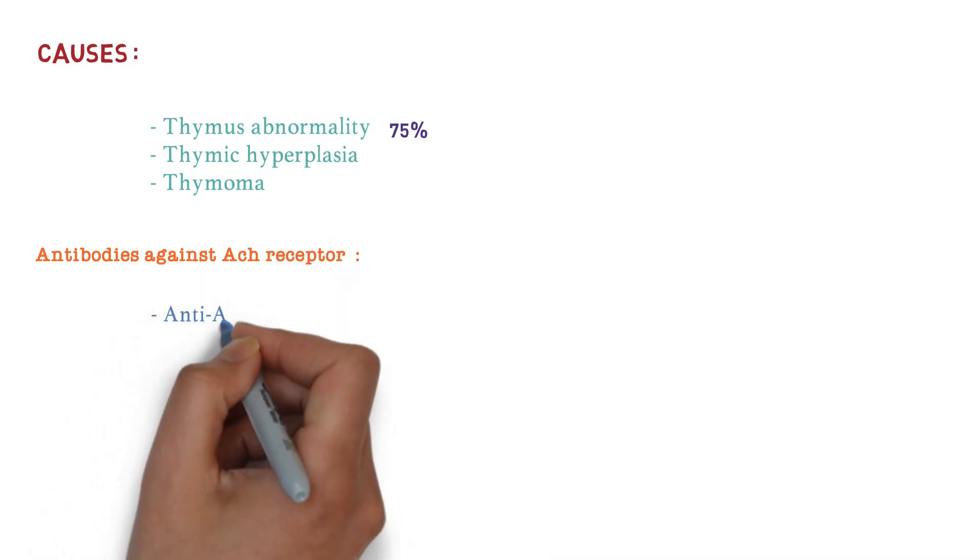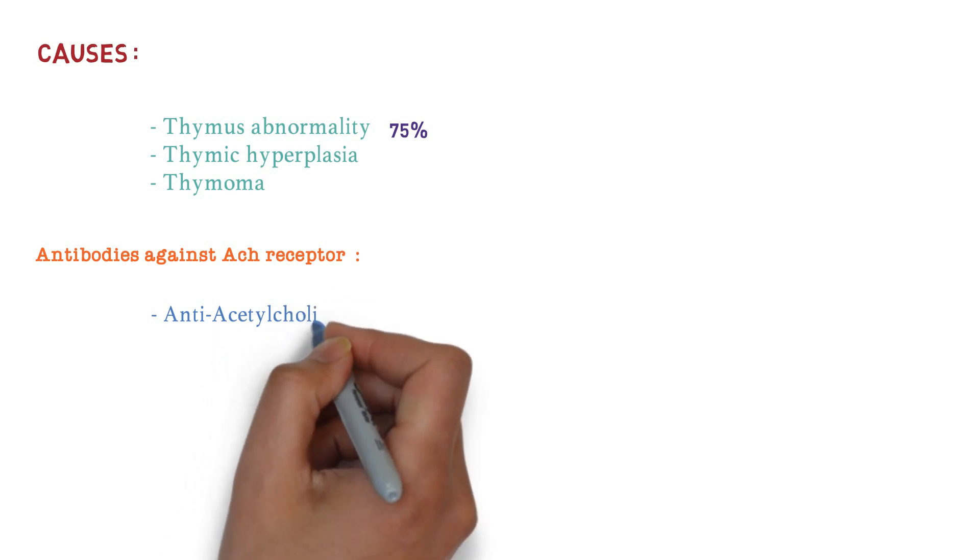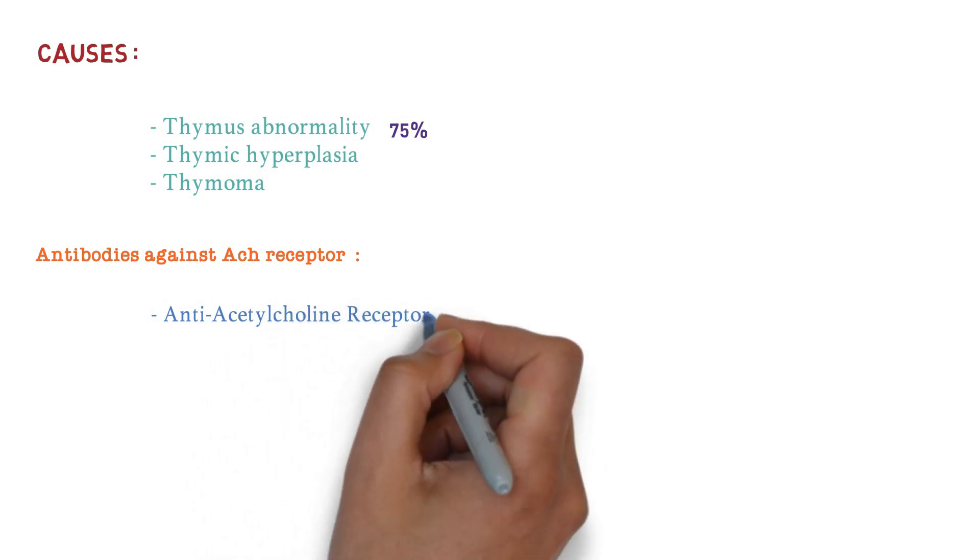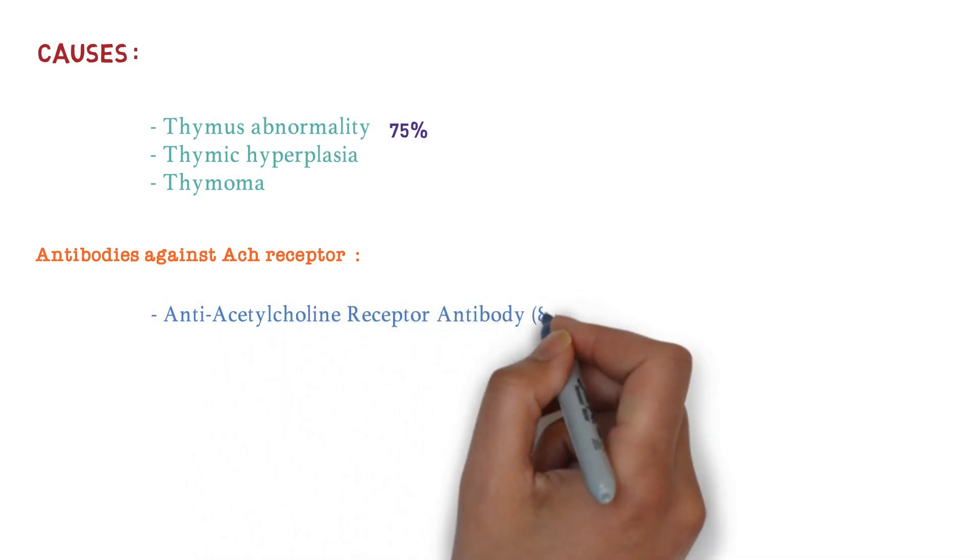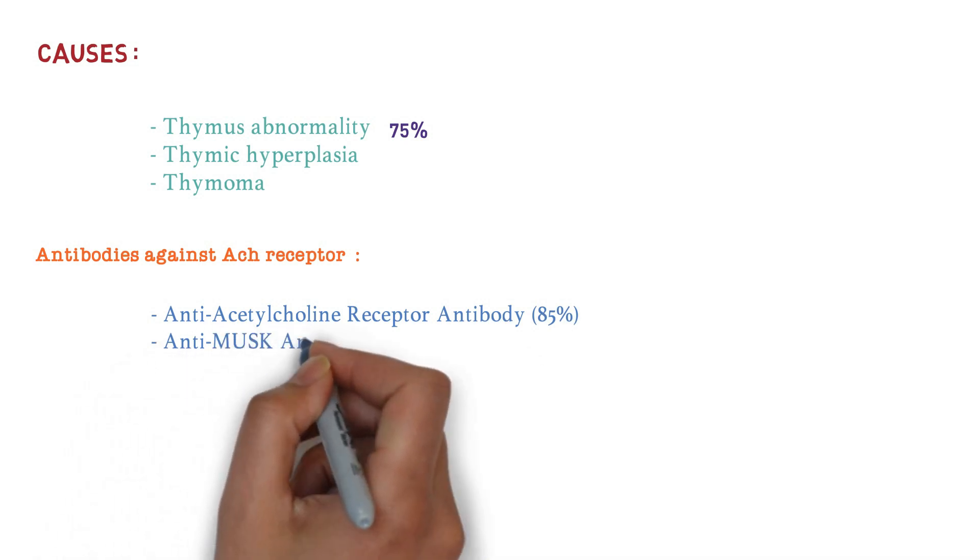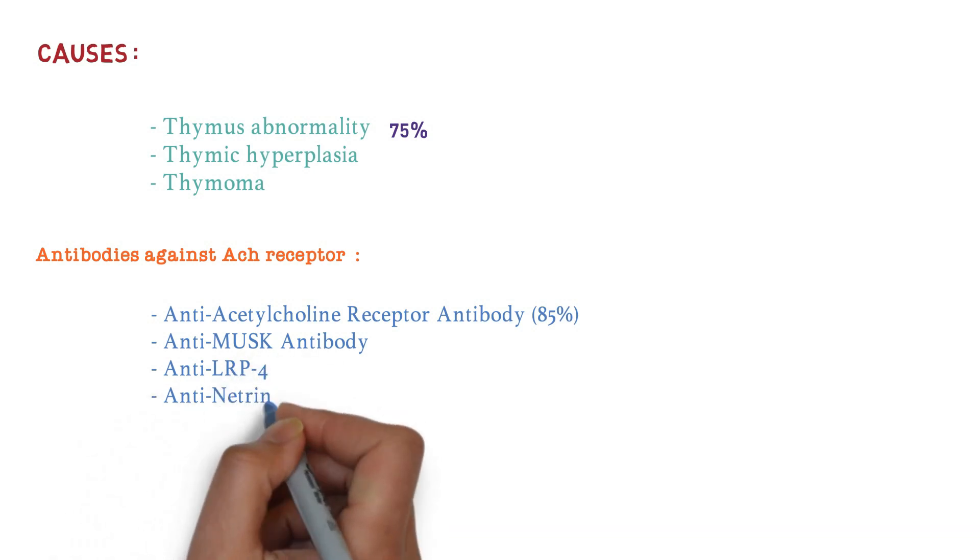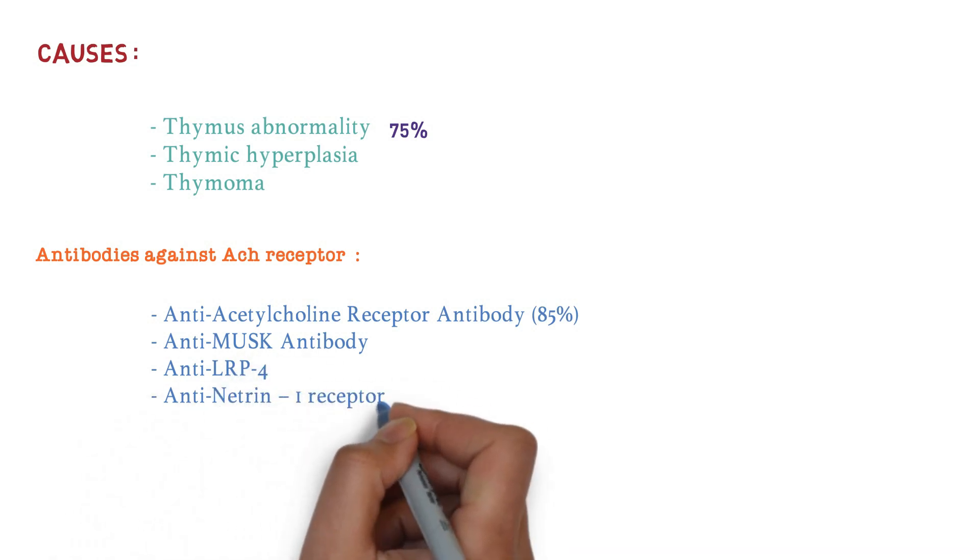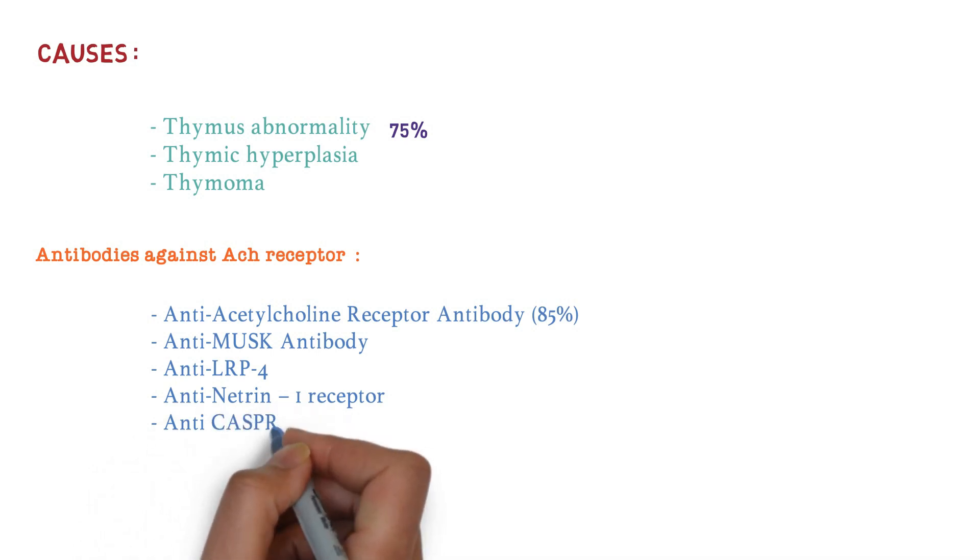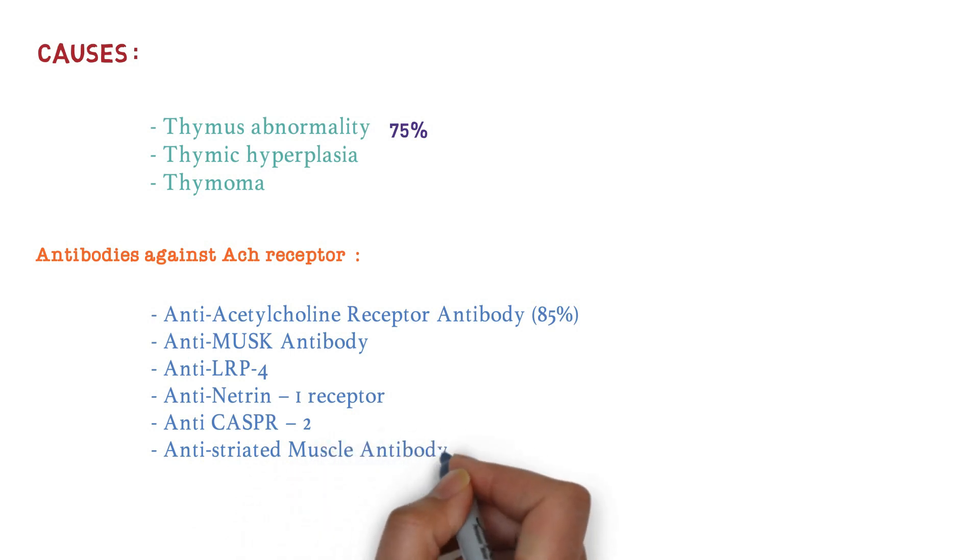The anticholinergic receptor antibodies are: anti-acetylcholine receptor antibody which are mainly formed in this disease, anti-MUSK antibody (muscle-specific kinase antibody), anti-LRP-4 antibody (low-density lipoprotein-related protein-4), anti-agrin-1 receptor, anti-Caspr-2, and anti-striated muscle antibody against titin.